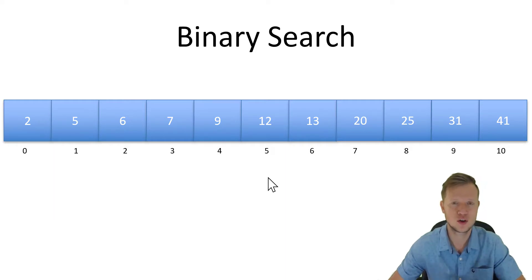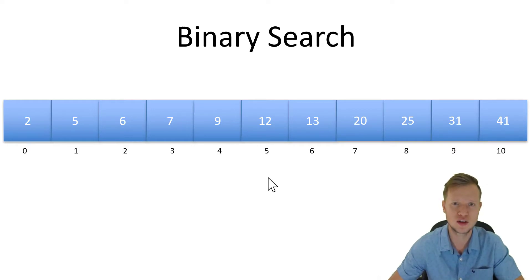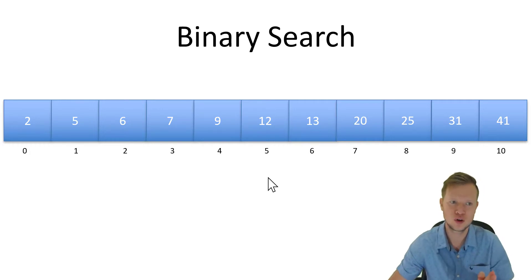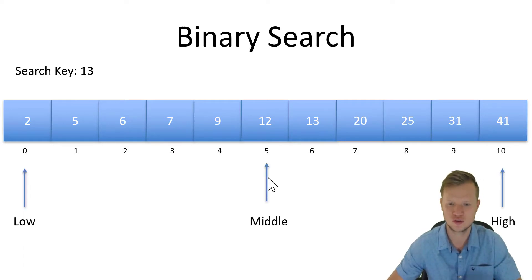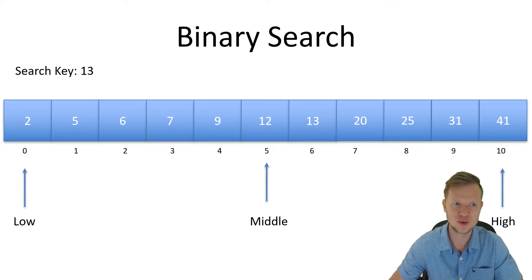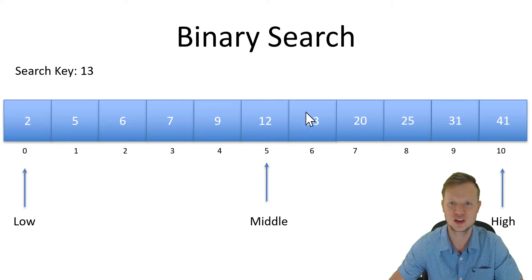Now we ask the question: is the value we are searching for equal to the middle value, bigger than the middle value, or smaller than the middle value? If the search key is bigger than the value stored at the middle index, we move the low value up to the middle and find a new middle. Let's visualize this: low is at index 0, high at index 10, and we are searching for the key 13.